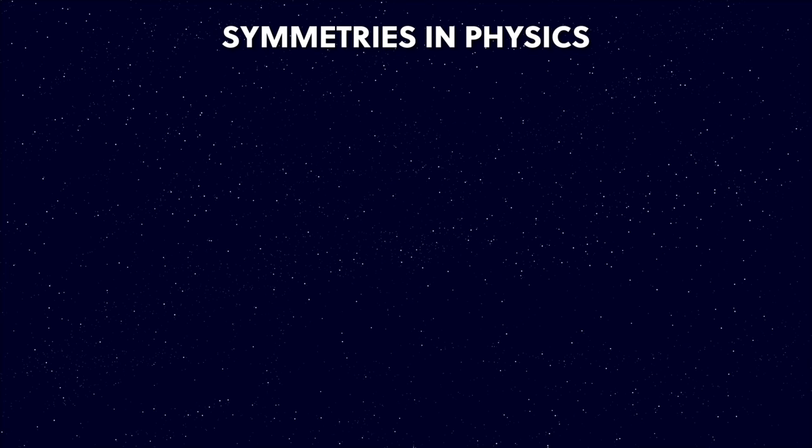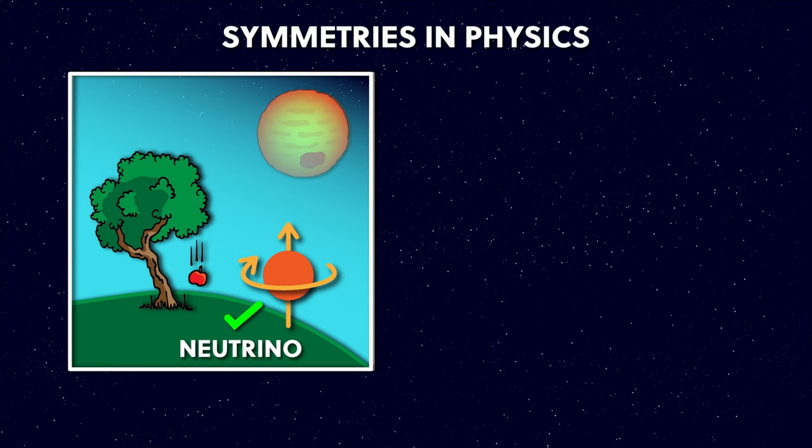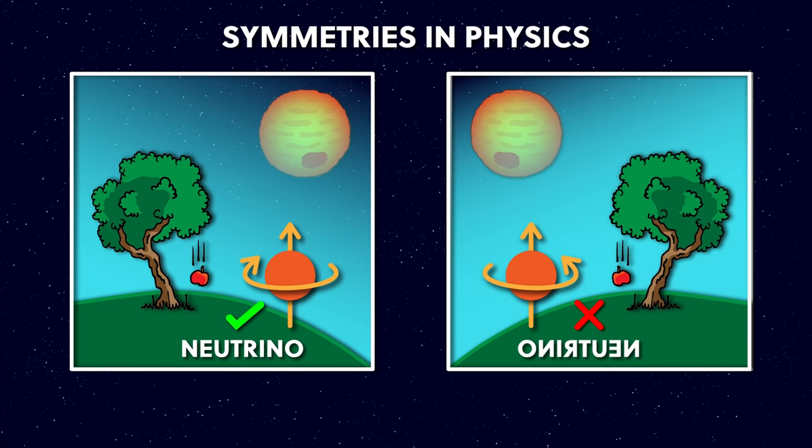Let's get back to the symmetries of physics. Symmetry in physics is an important concept to understand. If we change some global property — like, in an instant we turned the universe into a mirror image copy of itself — would the laws of physics be the same after that transformation? If so, the universe would be symmetrical with respect to mirror images, which is technically known as parity symmetry. So is the universe actually parity symmetric? The answer is yes, except for the neutrinos.